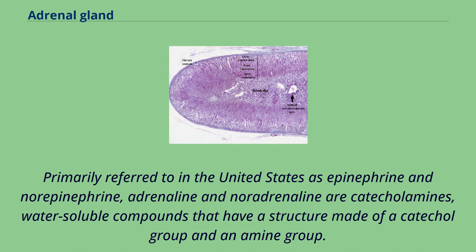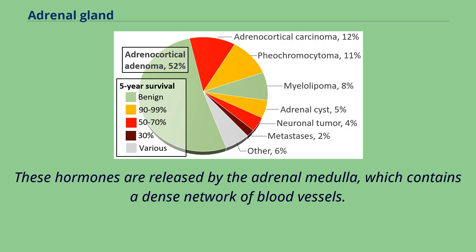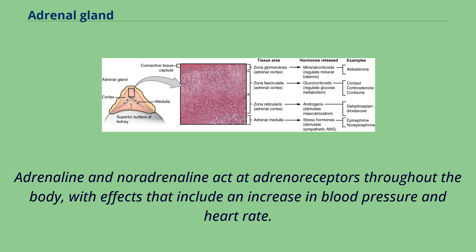Primarily referred to in the United States as epinephrine and norepinephrine, adrenaline and noradrenaline are catecholamins — water-soluble compounds with a structure made of a catechol group and an amine group. The adrenal glands are responsible for most of the adrenaline that circulates in the body, but only for a small amount of circulating noradrenaline. These hormones are released by the adrenal medulla, which contains a dense network of blood vessels.